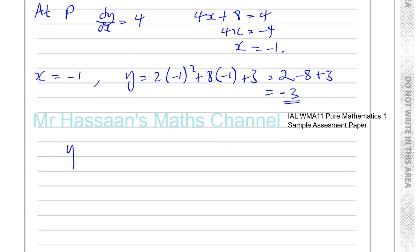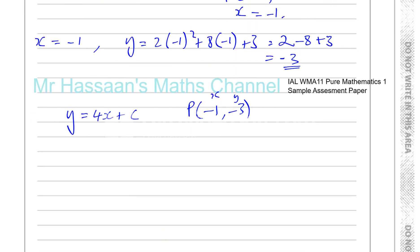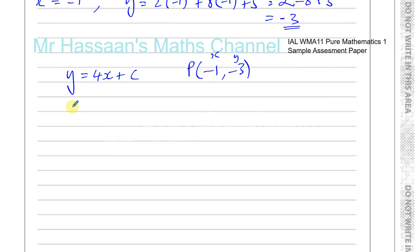Since the line y equals 4x plus c passes through point P at (minus 1, minus 3), we substitute these values: minus 3 equals 4 times (minus 1) plus c, so minus 3 equals minus 4 plus c, giving c equals minus 3 plus 4 equals 1. So c equals 1.